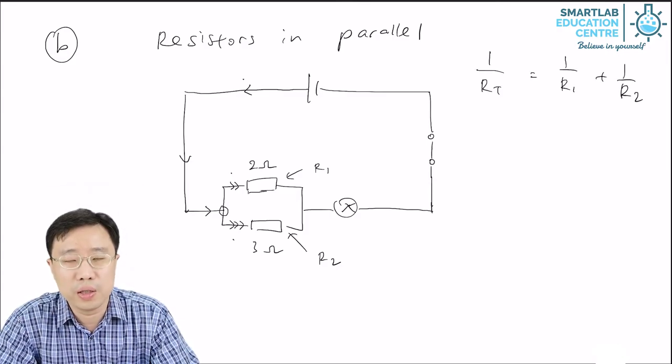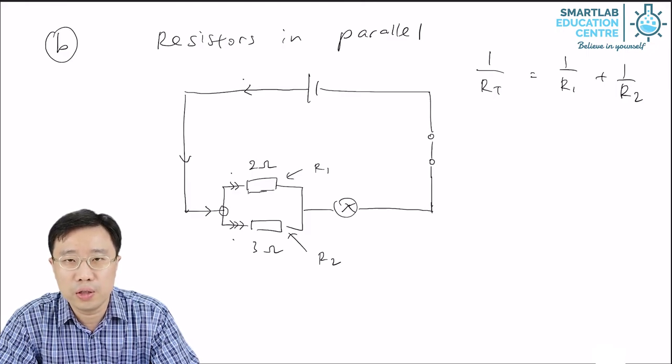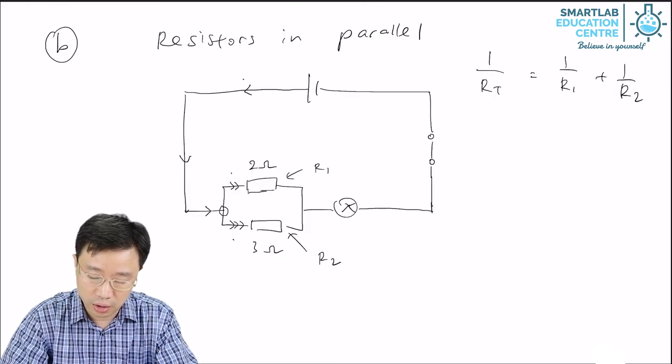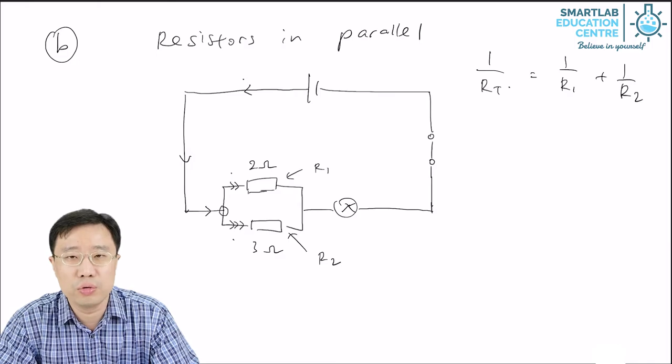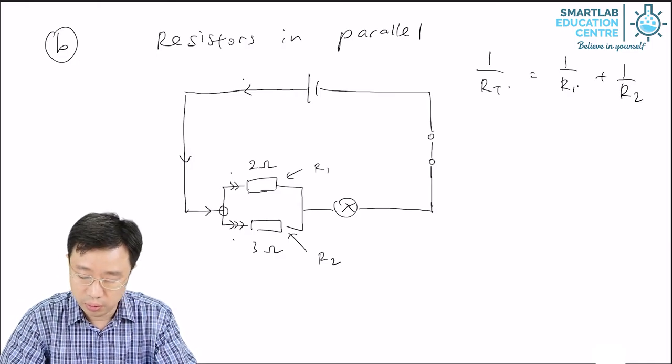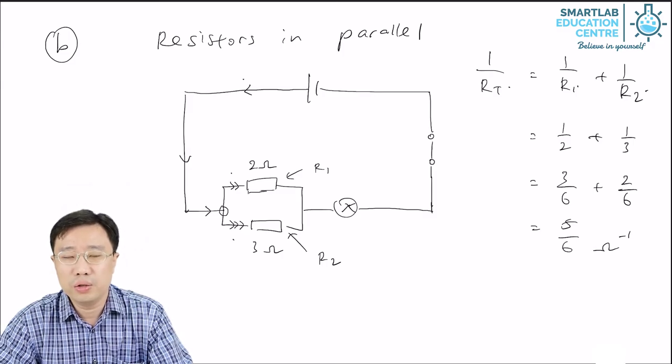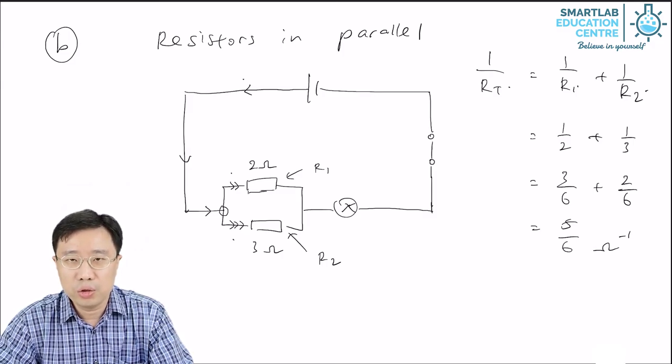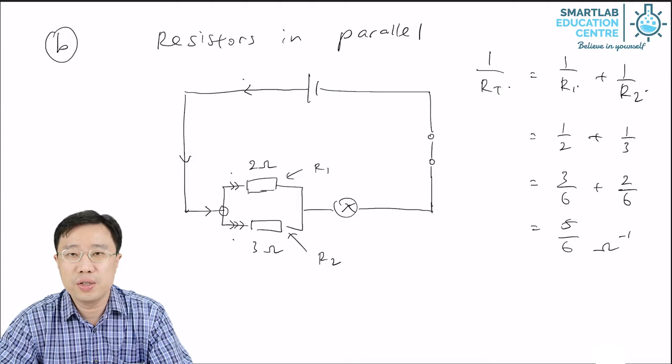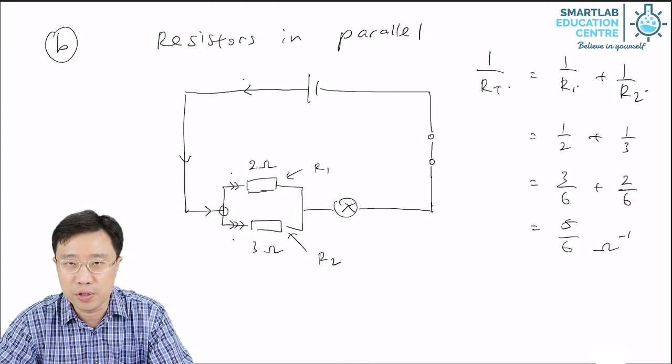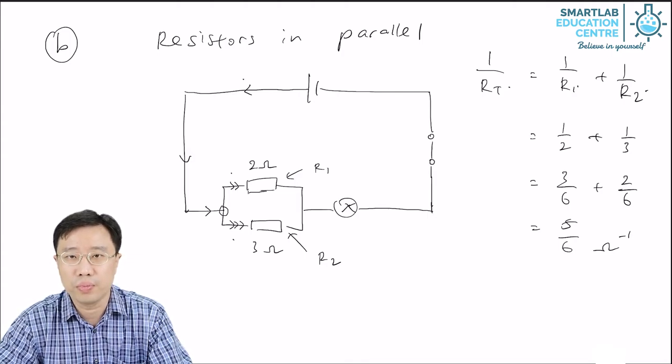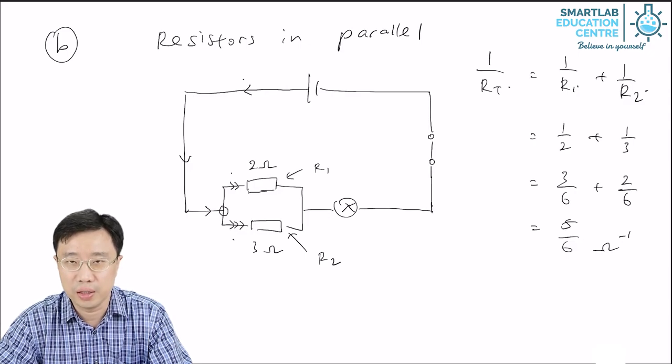We use this formula. 1 over the total resistance Rt is equal to 1 over R1 plus 1 over R2. So applying the formula, you can see that 1 over the total resistance gives you 5 over 6 per Ohm. That is the unit in this case.